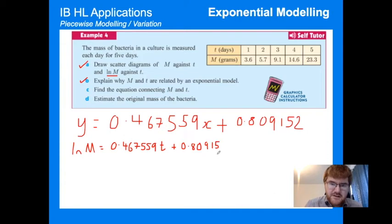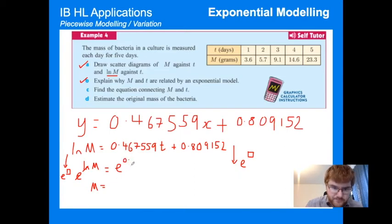So when we turn this into an exponential model, it's a slightly different process compared to power modeling. The first thing we're going to do is raise both sides to the power of e. If we do it on the left hand side, notice that these two things are going to cancel and we'll be left with m equals. This is the reason we're doing that - to get m on its own. Similar process to power modeling, but we need to take e to the power of all this: 0.467559t plus 0.809152.